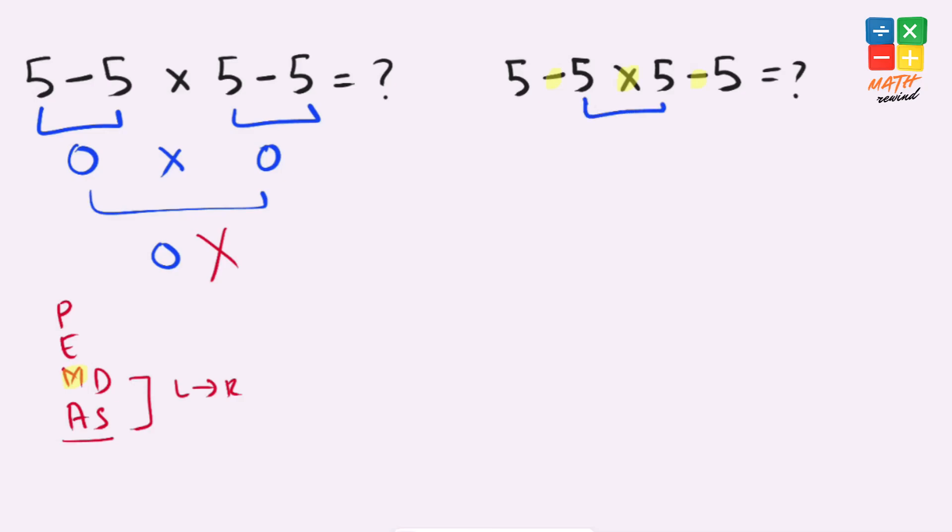So we'll solve this multiplication first, which is 5 times 5 equals 25. Our equation becomes 5 minus 25 minus 5.